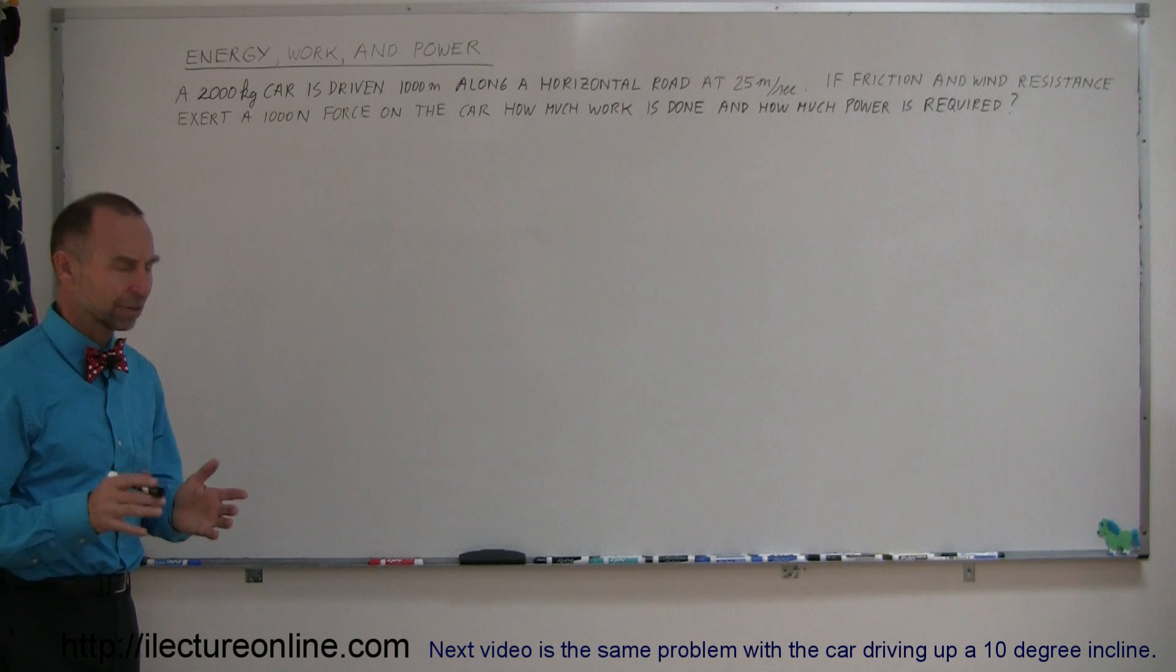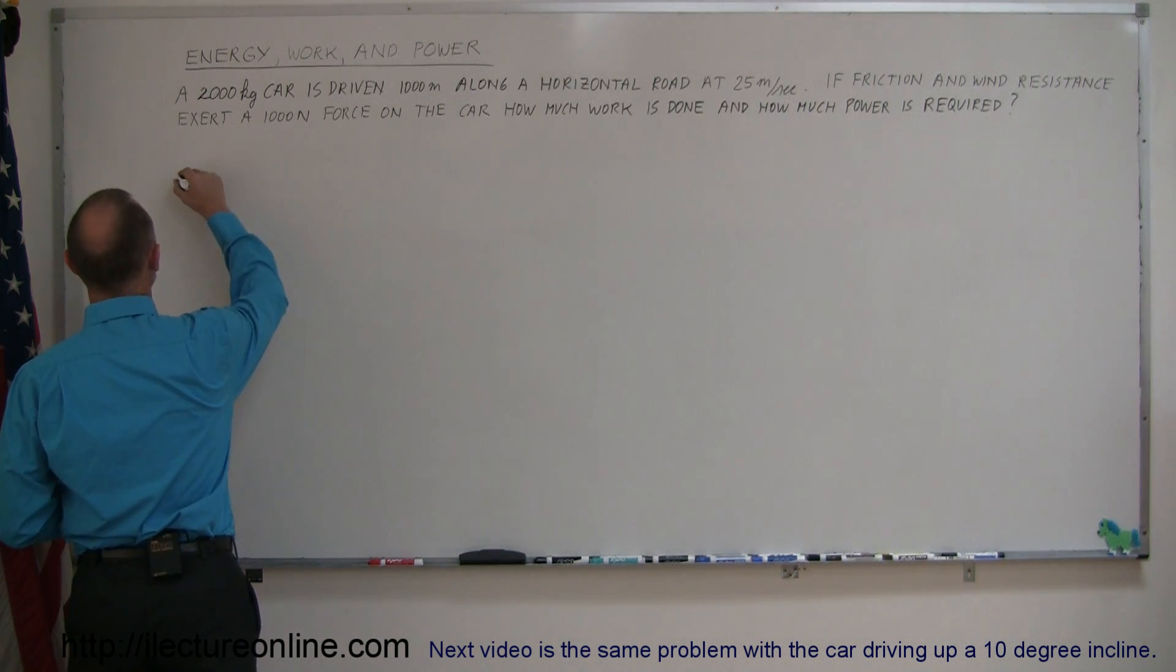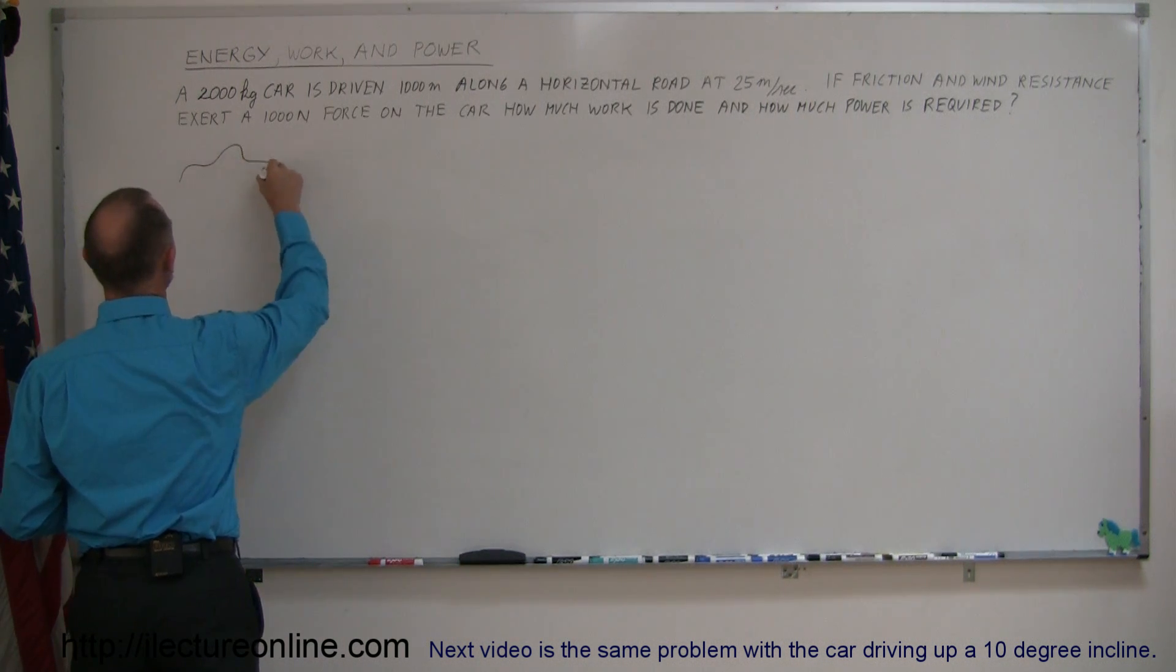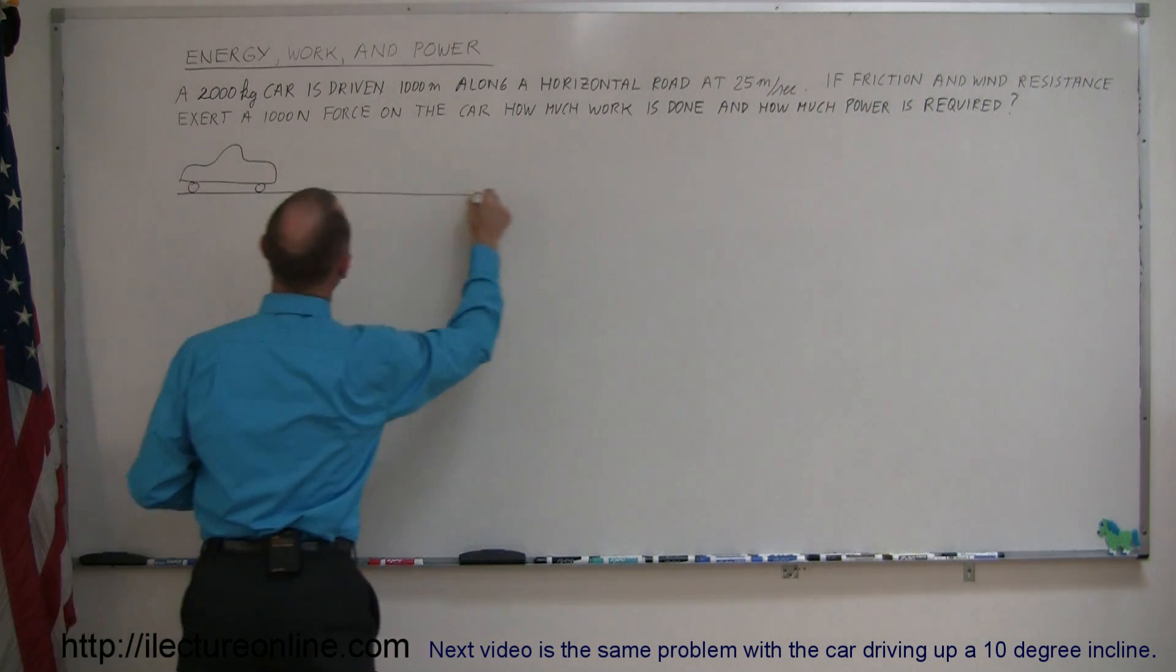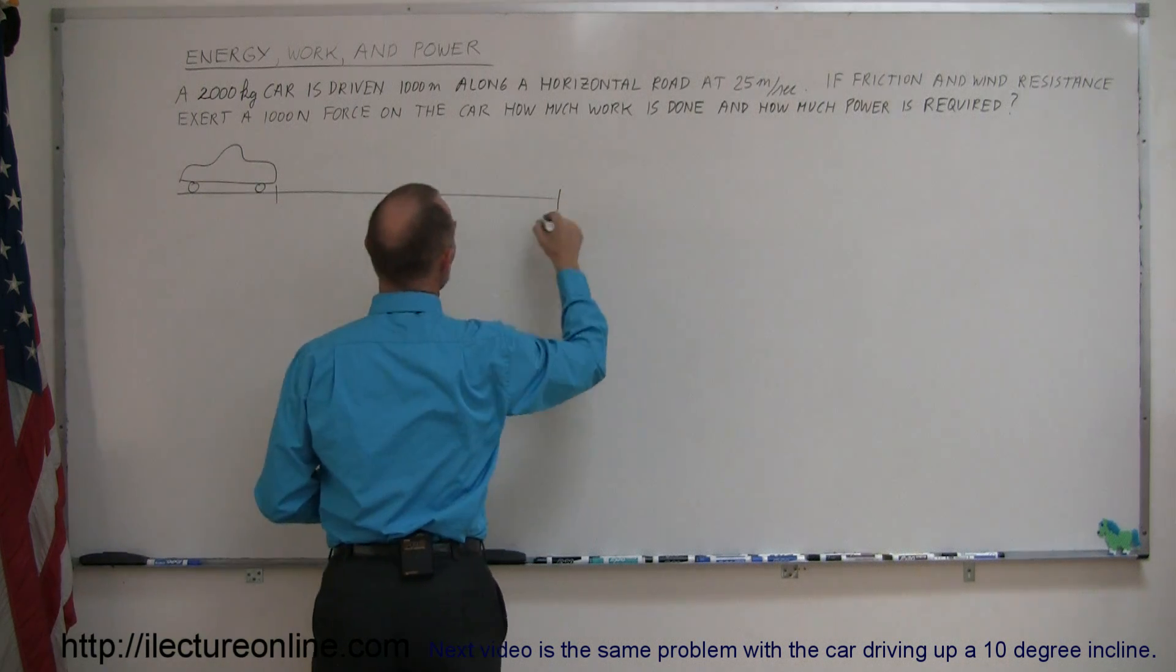All right, let's draw a little picture of that so we get a better feel for what's going on here. So here's our automobile. It's a fancy model driving along a road, a distance of 1,000 meters.